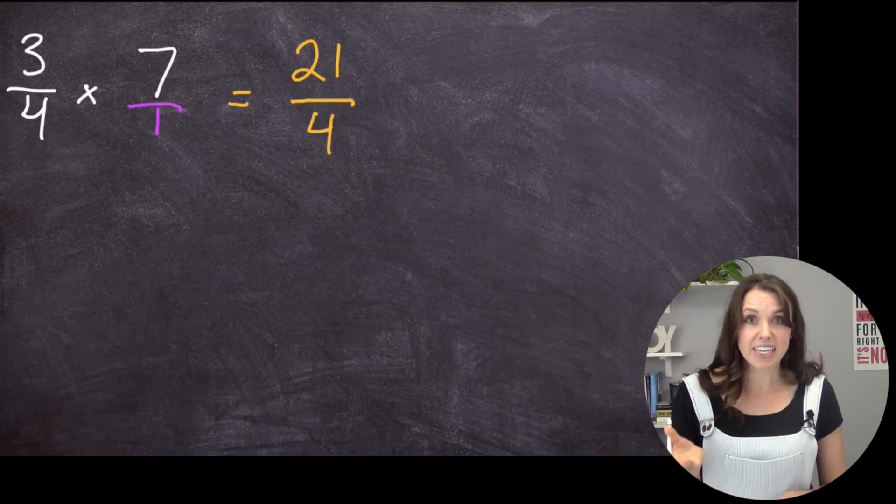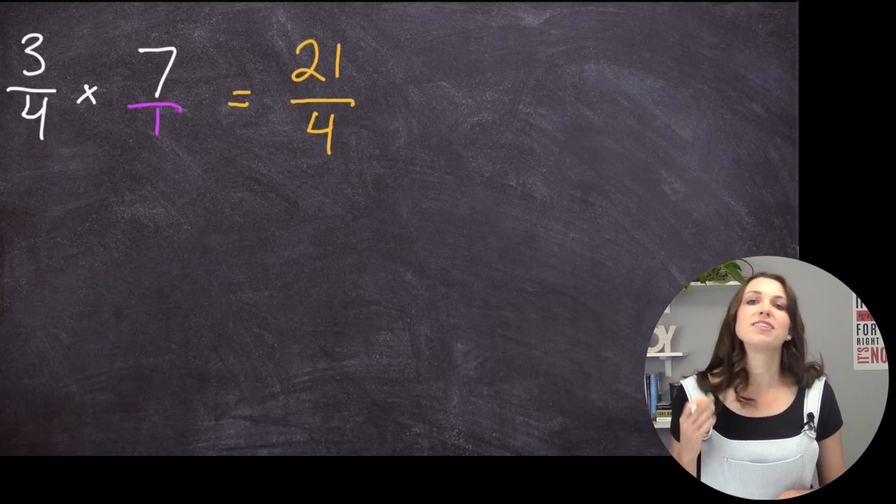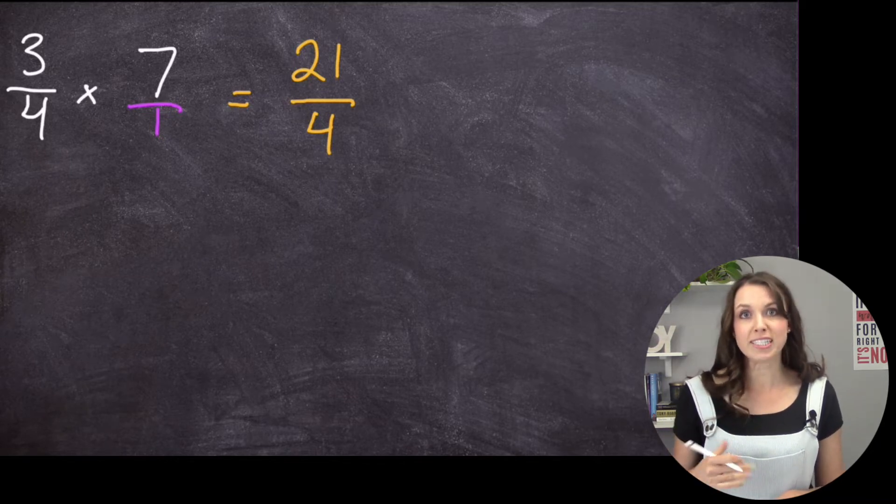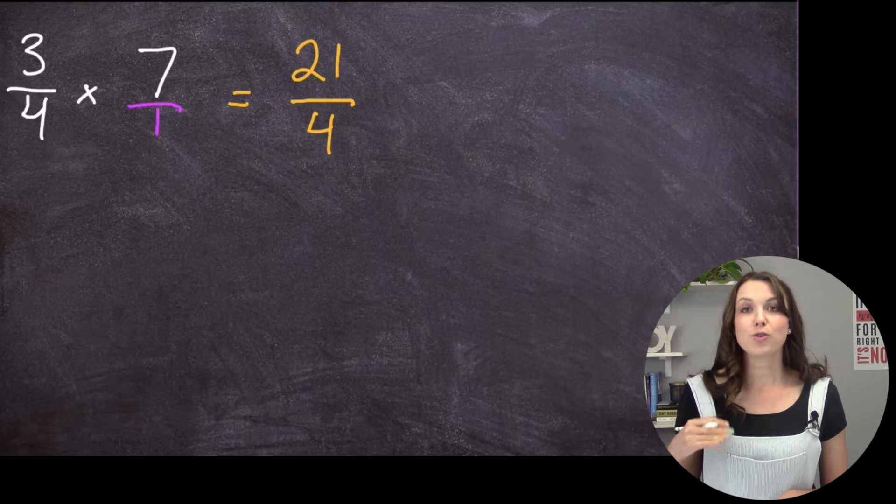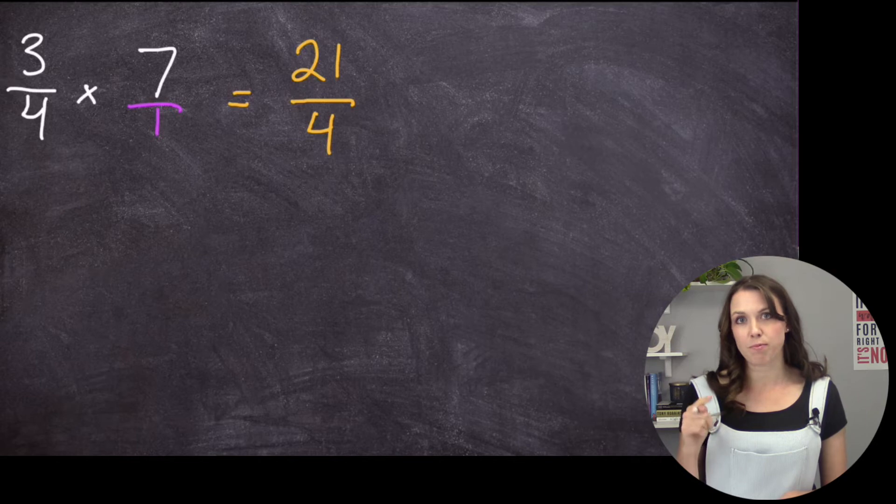Now sometimes this answer will work. But a lot of times it's not going to. Notice how the numerator, which is the number on the top, is bigger than the denominator, which is the number on the bottom. So we're going to do a step to take it so we have a mixed fraction instead of an improper fraction like this.